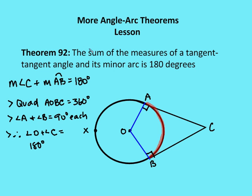Our last theorem for this lesson: Theorem 92. I know you were probably hoping it was the last theorem of the class, but unfortunately it's not. Theorem 92: the sum of the measures of a tangent-tangent angle and its minor arc is 180 degrees. We've drawn two radii, AO and BO, to the center of circle O, and two tangents AC and BC intersecting at point C. What I want to prove is that angle C plus minor arc AB equals 180 degrees.